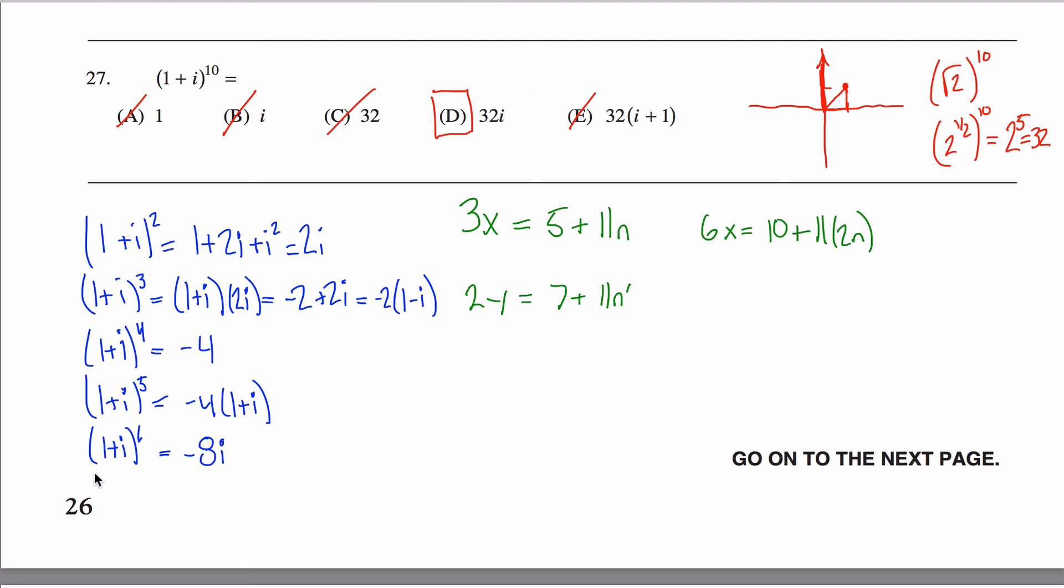I know it's 32i. And you can sort of see that this is getting bigger as I get bigger. 1 plus i to the tenth power is going to be, well, 1 plus i to the sixth power times 1 plus i to the fourth power. So this times this is just 32i.